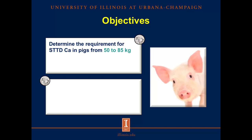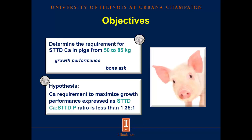Therefore, the objectives of this experiment were to determine the requirement for standardized total tract digestible calcium in pigs from 50 to 85 kg based on growth performance and bone ash, and to test the hypothesis that the requirement for calcium needed to maximize growth performance, expressed as a ratio between digestible calcium and digestible phosphorus, is less than 1.35 to 1. This number comes from previous research and is based on the weight of the pigs.